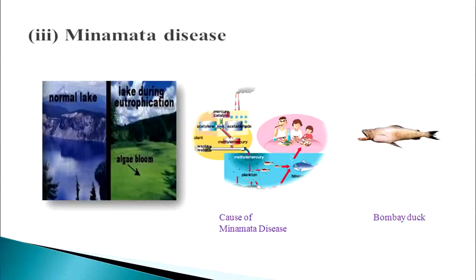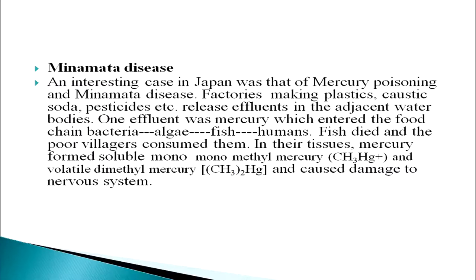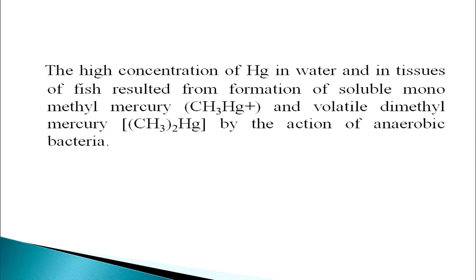Next is Minamata disease. An interesting case in Japan was mercury poisoning and Minamata disease. Factories making plastics, caustic soda, pesticides, etc. released effluents into the adjacent water body. One effluent was mercury, which entered the food chain — bacteria, algae, fish, and humans. Fish died and the poor villagers consumed them. In their tissues, mercury formed soluble monomethyl mercury and volatile dimethyl mercury, causing damage to the nervous system. The high concentration of mercury in water and tissues of fish resulted in the formation of these compounds by the action of anaerobic bacteria.